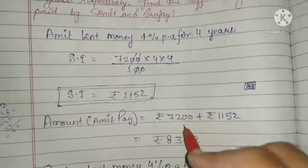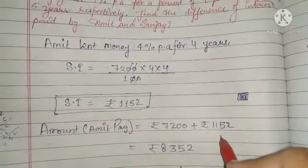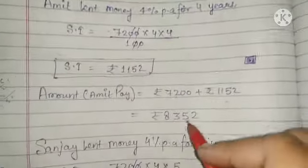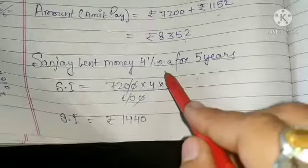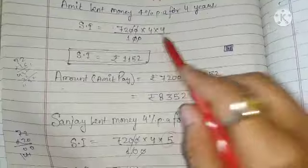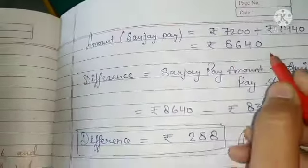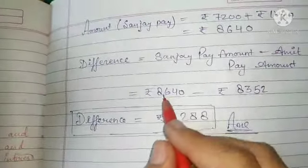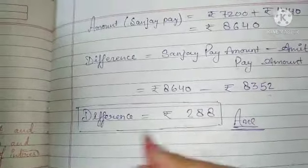Amount for Amit = Principal + SI = 7,200 + 1,152 = Rs. 8,352. For Sanjay, the rate is also 4% but the time is 5 years, so time changes from 4 to 5. Solving with PRT/100 gives Amount for Sanjay = Rs. 8,640. Difference = 8,640 − 8,352 = Rs. 288.